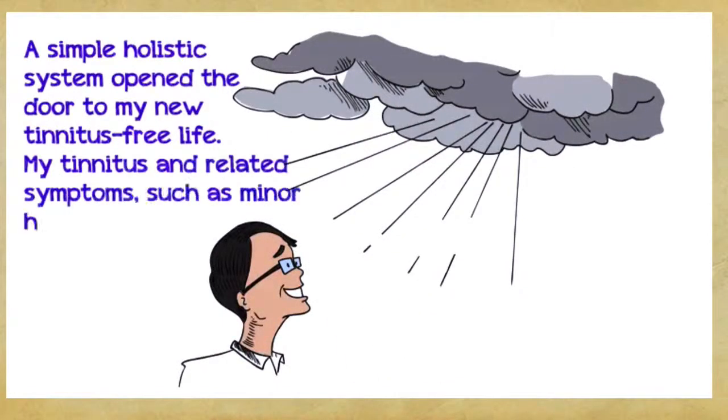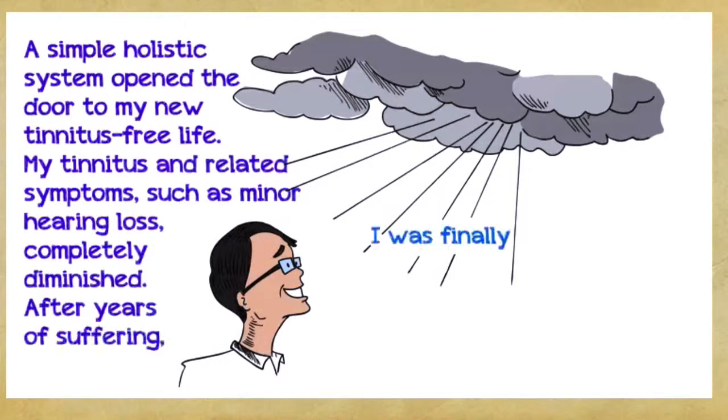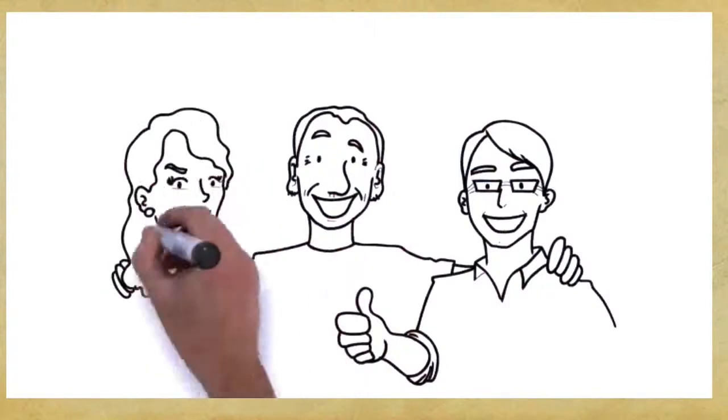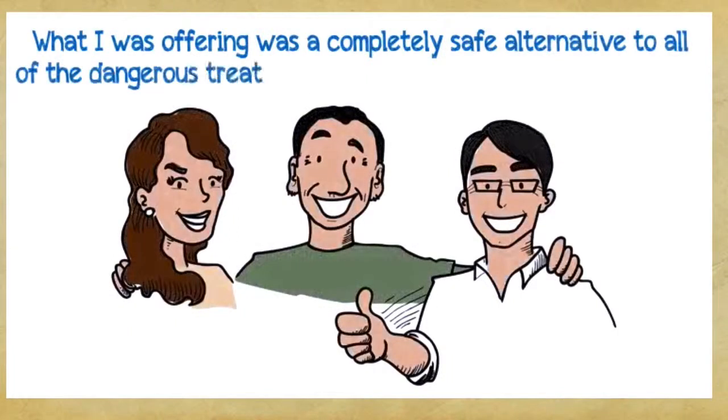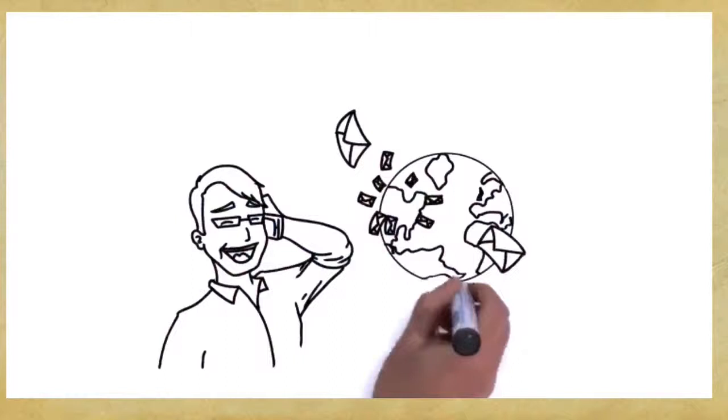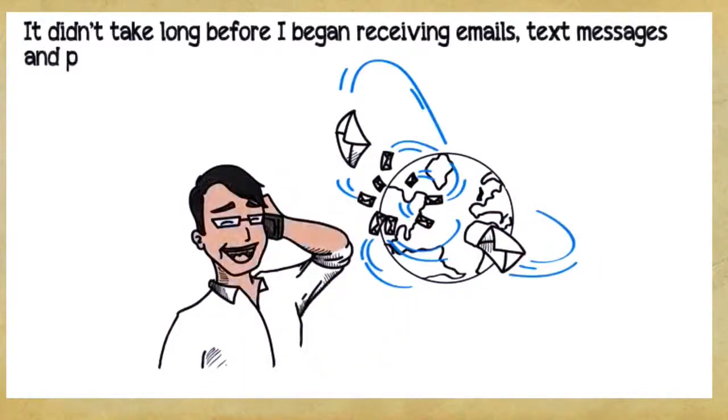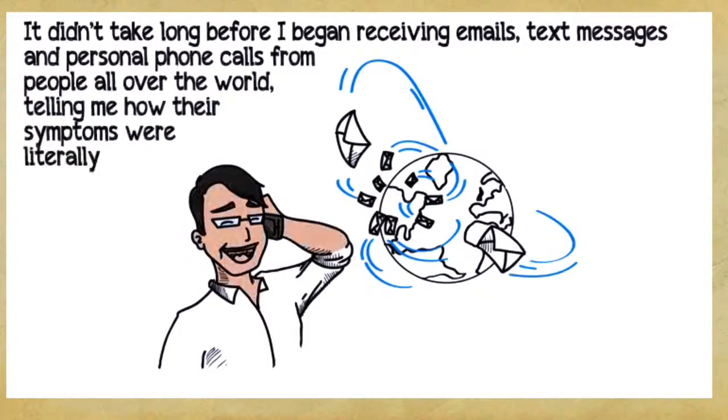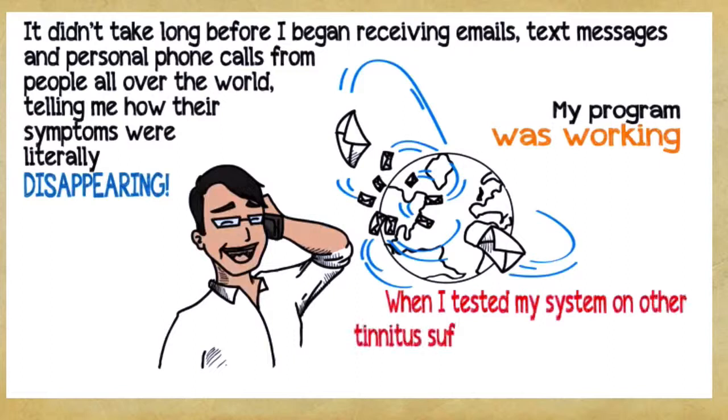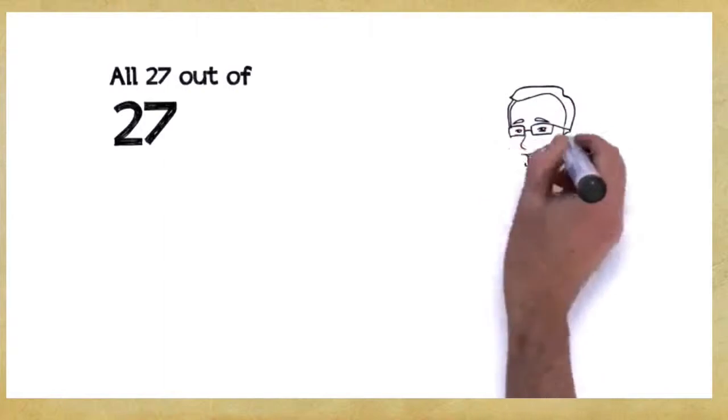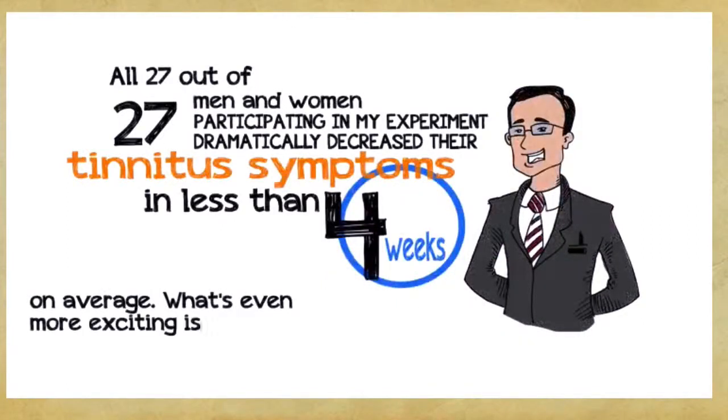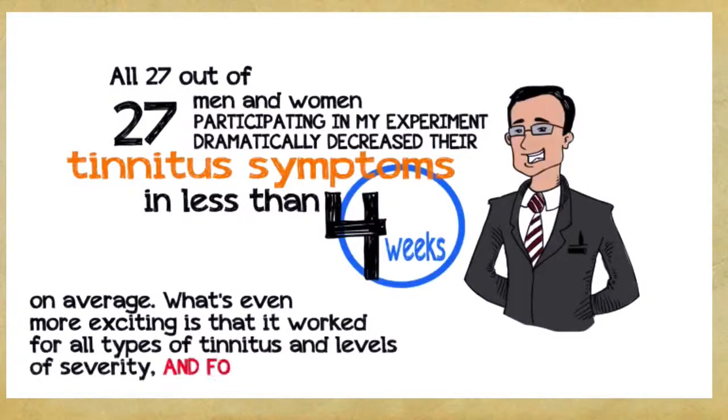Since I'd been on multiple blogs and various tinnitus groups for years, it wasn't difficult to find other people willing to give my treatment a try. I sent off my five-step protocol to several dozen tinnitus sufferers and waited for them to tell me how it worked. When I tested my system on other tinnitus sufferers, it yielded the same shocking and groundbreaking results. All 27 out of 27 men and women participating in my experiment dramatically decreased their tinnitus symptoms in less than four weeks on average. What's even more exciting is that it worked for all types of tinnitus and levels of severity and for men and women of any age.